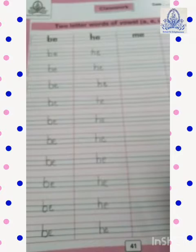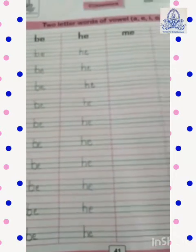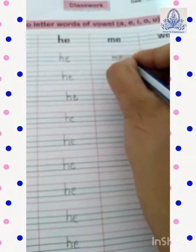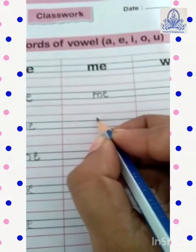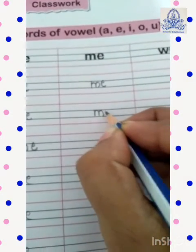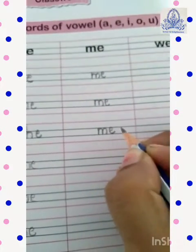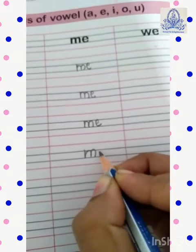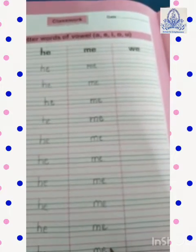H-E, he. And the next word is M-E, me. M-E, me. M-E, me. Yes kids, M-E, me.